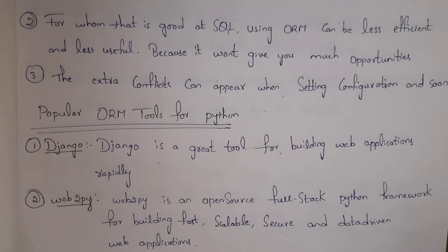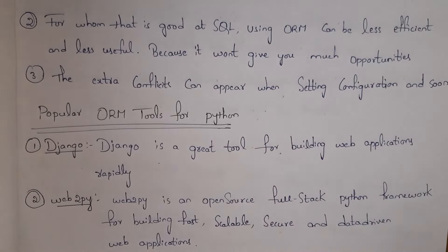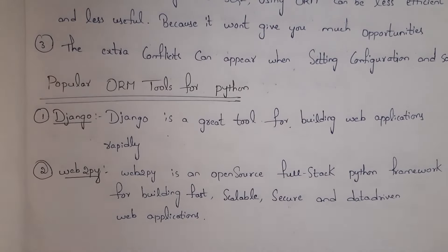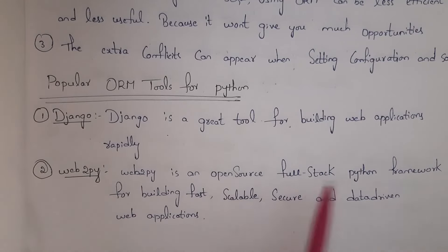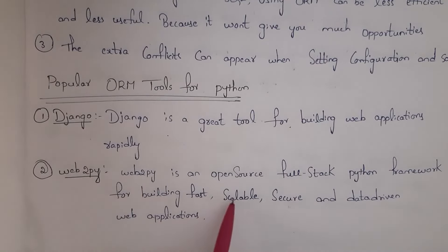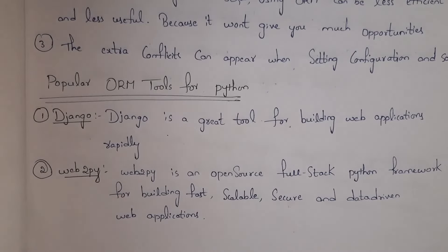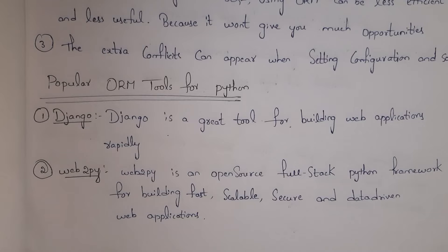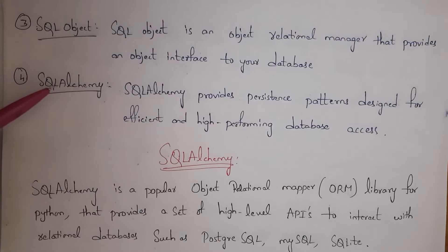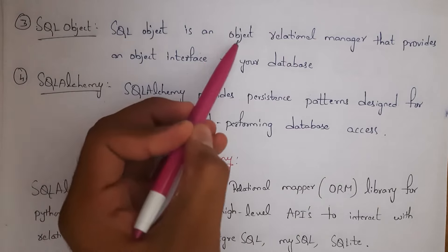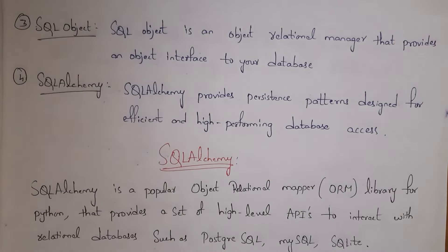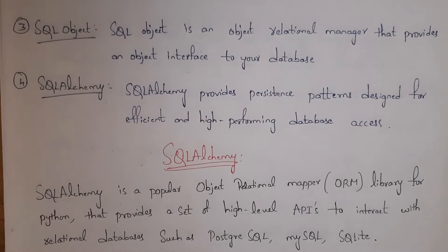Not only SQLAlchemy, but there are many other Python ORM tools available. Django is a great tool for building web applications rapidly. Web2py is an open-source full-stack Python framework for building fast, scalable, secure, and data-driven web applications — open source means you can download it free from the internet. SQLObject and SQLAlchemy are both object-relational managers; both allow you to establish communication between a Python program and a database.